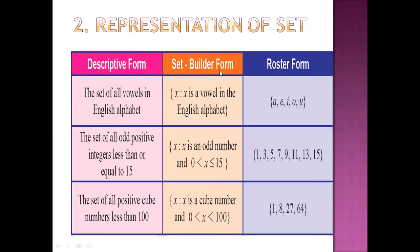In set builder form, we denote the set using a notation — an alphabetical series. But in roster form, we try to contain all the elements using commas — the elements are separated by commas.